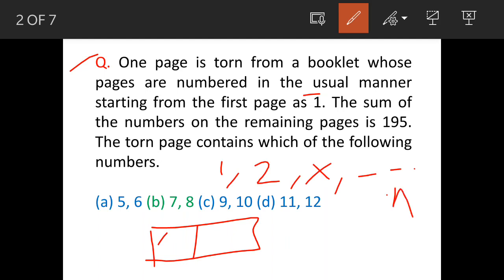The sum of numbers on the remaining pages, that is one, two, if you add all these numbers one plus two and you leave this number then plus whatever number three, four, up to n, so sum is 195. So, the question is: the torn page contains which all numbers.